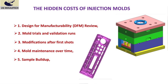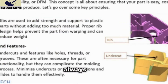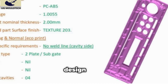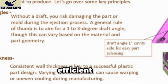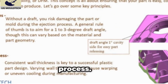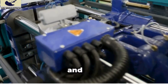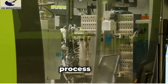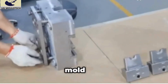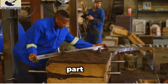Beyond the initial price tag, there are hidden costs associated with injection molding that can significantly impact your budget. A Design for Manufacturability (DFM) review analyzes your part design to identify potential manufacturing challenges and optimize it for efficient molding — saving money by preventing costly mistakes. Before full-scale production, mold trials and validation runs test the mold's performance and fine-tune the process. It's also not uncommon to require modifications after initial test shots, ranging from minor tweaks to more significant alterations depending on part and mold complexity.